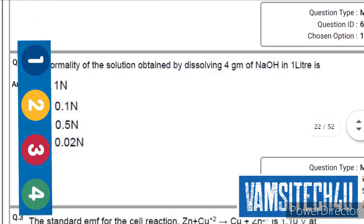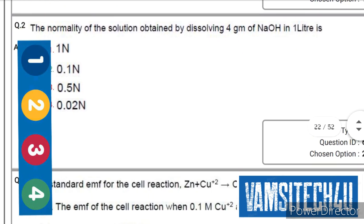Second question: The normality of the solution obtained by dissolving four grams of NaOH in one liter is... the correct answer is second option, that is 0.1N.